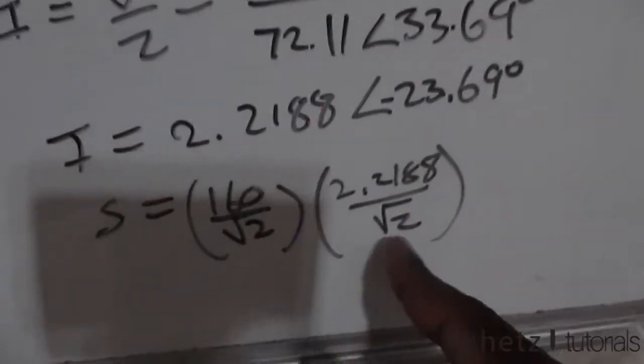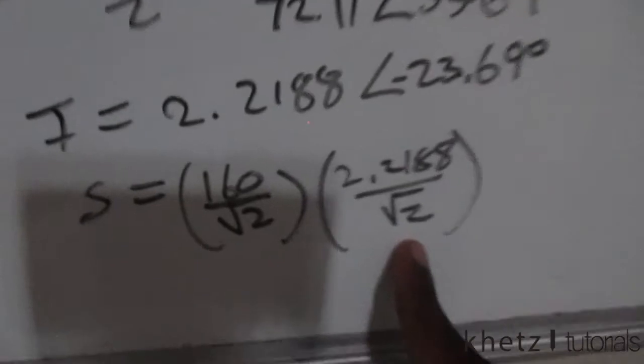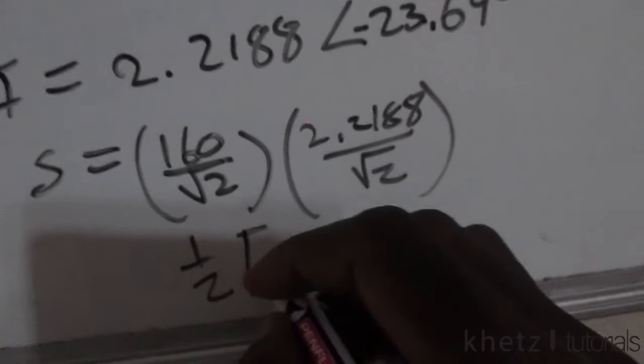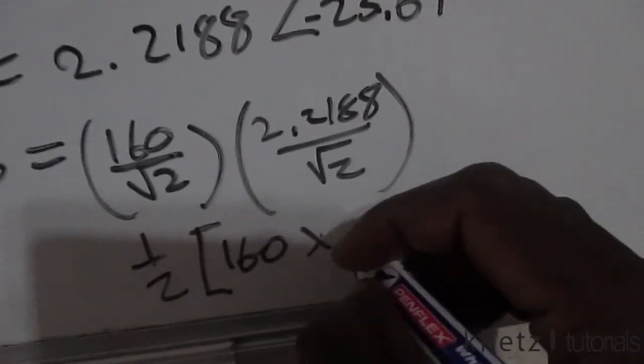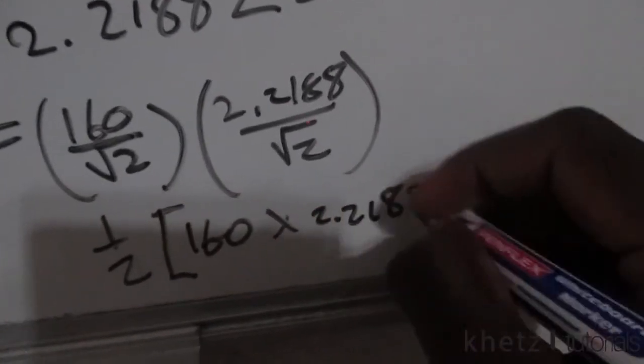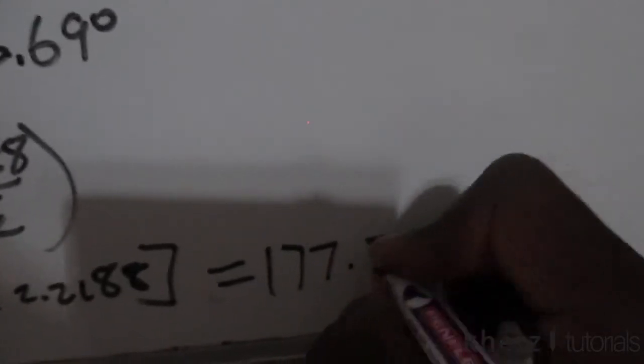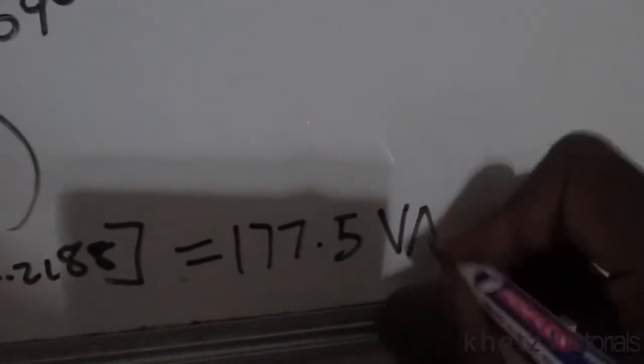To simplify this, you can see that square root of 2 multiplied by square root of 2 is actually 2, so we just take out half, which is also the same as half of 160 times 2.2188. This should give you an apparent power of value 177.5 volt amperes.